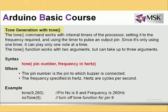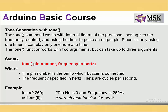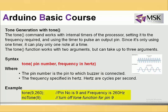The tone function works with the internal timer of the processor. It takes either two or three arguments — the third is optional. The arguments are: pin number (where the buzzer is connected) and frequency in Hertz. For example, tone(9, 260) generates a frequency of 260 Hz on pin 9. No tone stops the sound on that pin. So tone and no tone repeat to produce sound.